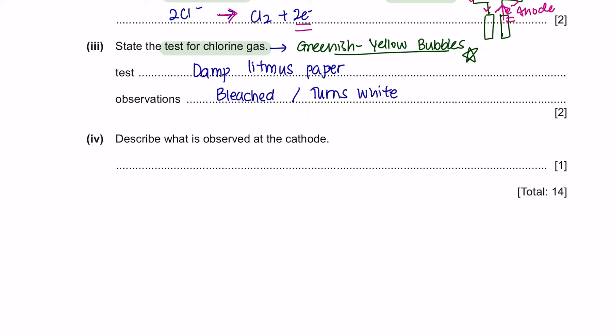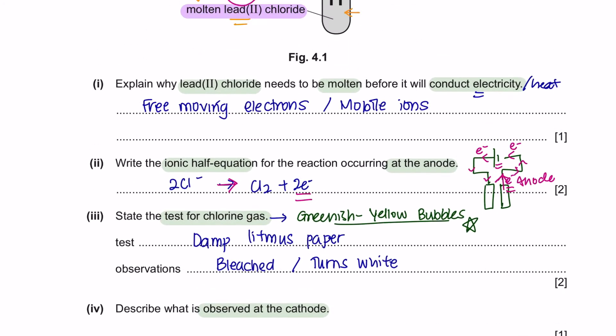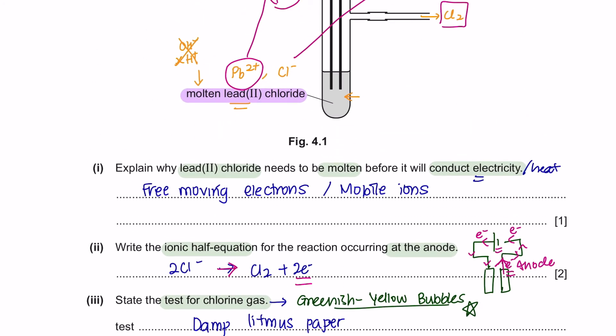Next, describe what is observed at cathode. At cathode, you have your lead 2+ being attracted. Since it is at cathode, it will receive electrons to form lead. This is your product. This is not your observation. Your observation, since it is lead, you will see a shiny gray solid being formed over here.